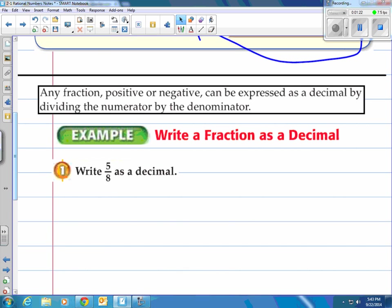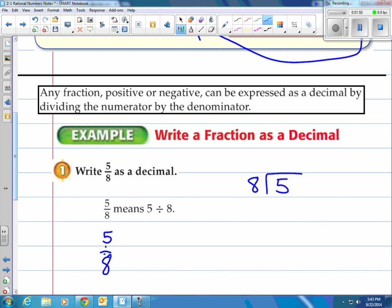What about this? Any fraction, positive or negative, can be expressed as a decimal by dividing the numerator by the denominator. So here they want you to take 5/8 as a decimal. So all we have to do is take 5/8 and divide by 8. 5 goes in the inside of the house, 8 goes on the outside of the house. And then do your long division.